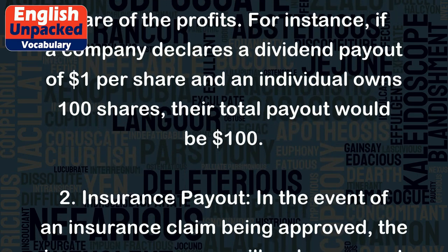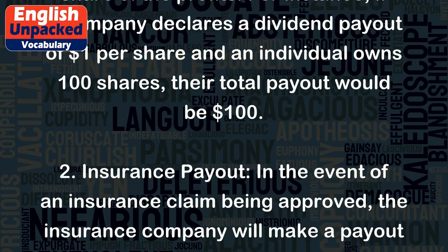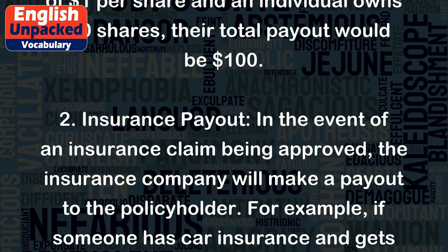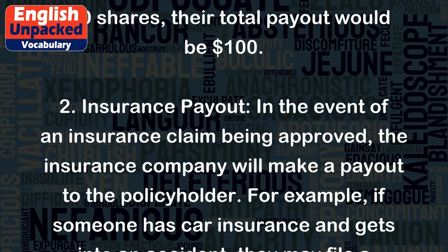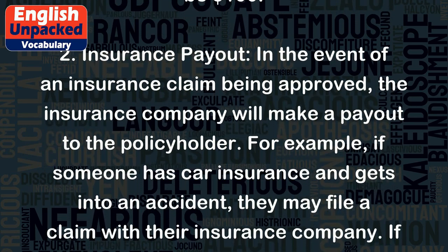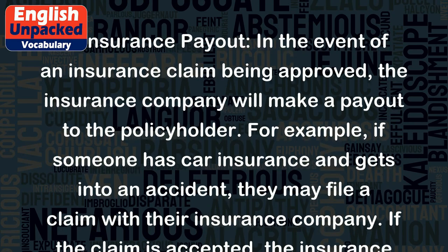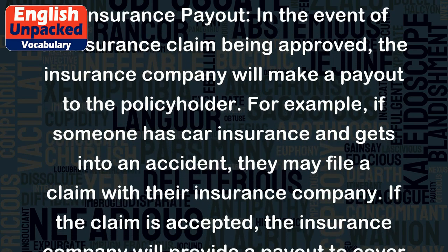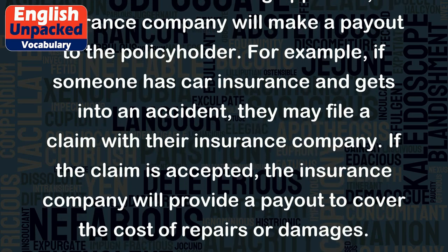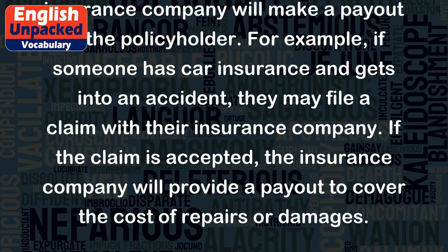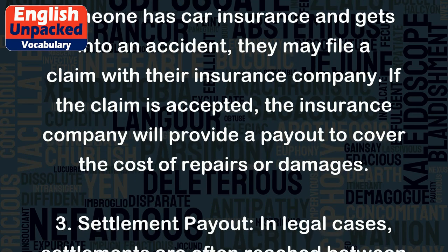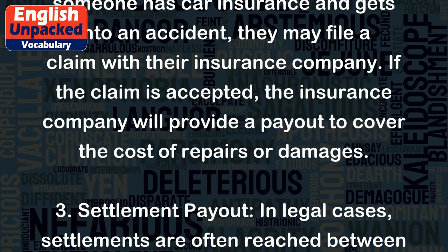2. Insurance Payout: In the event of an insurance claim being approved, the insurance company will make a payout to the policyholder. For example, if someone has car insurance and gets into an accident, they may file a claim with their insurance company. If the claim is accepted, the insurance company will provide a payout to cover the cost of repairs or damages.